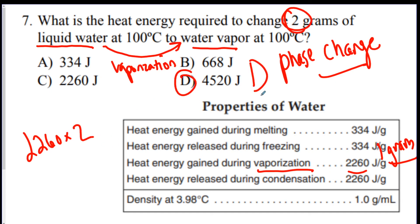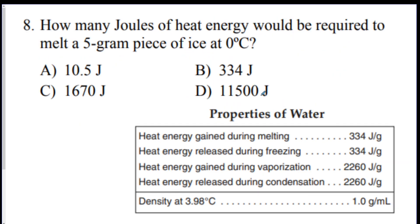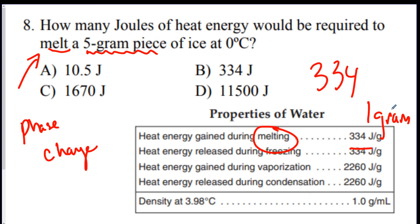Number 8. How many joules of heat energy would be required to melt a 5 gram piece of ice at 0 degrees Celsius? Melt. There is a phase change here. So, now we've got to figure out, okay, how much does it take to melt? It takes 334. But, this is for 1 gram only. So, in order to figure out how many for 5 grams, you just do 334 times 5. And, if you do that, you get 1,670. So, the answer is C.